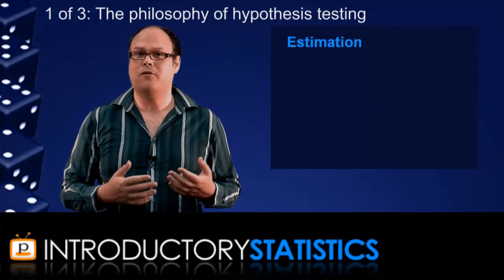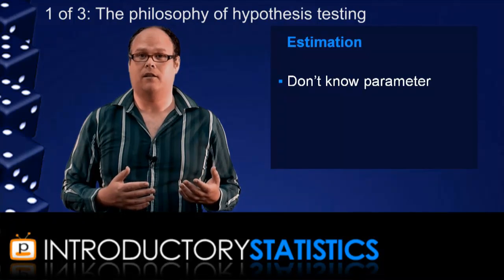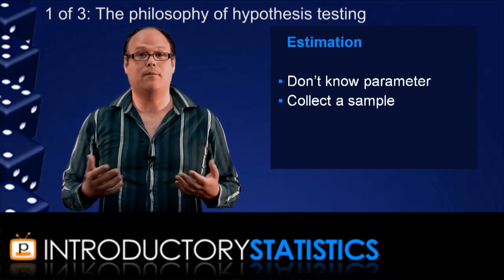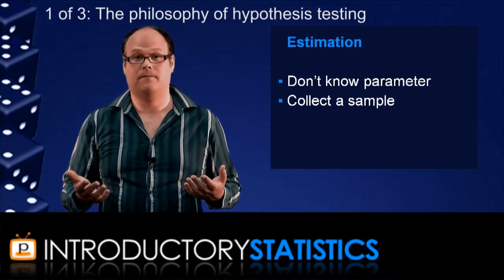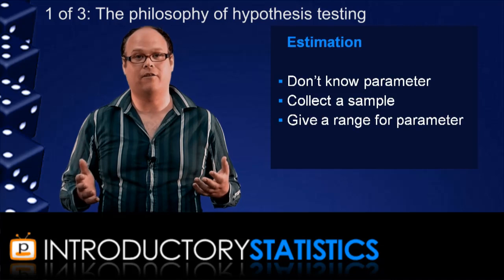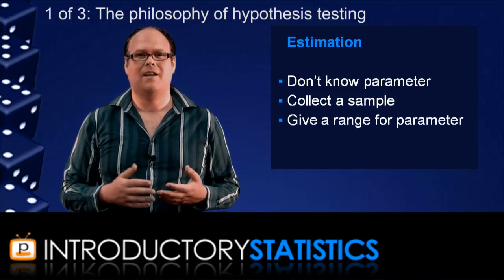In estimation, when we don't know anything about a population parameter, like a population proportion, we collect a sample and calculate a sample statistic, like a sample proportion. We then use the sample statistic to estimate a range of values for the parameter.